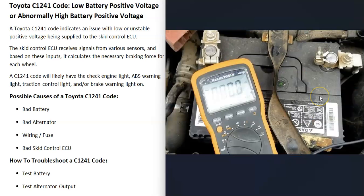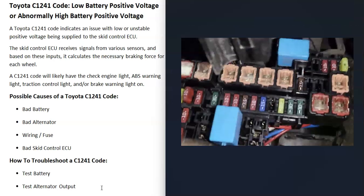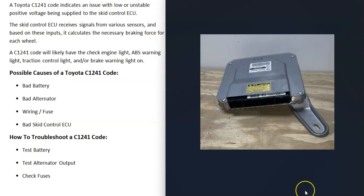Some possible causes include a bad battery or bad terminals on the battery, a bad alternator that might not be charging anymore, an issue in the wiring, or a blown fuse. It's also possible that the skid control ECU itself has gone bad, but this is fairly rare. Usually it's going to be something going on with the power supply going to the ECU.